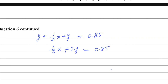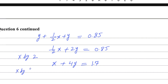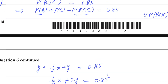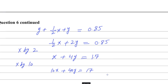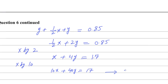To get rid of the denominator, multiply by 2: X plus 4Y equals 1.7. To remove the decimal, multiply by 10: 10X plus 40Y equals 17. This is the second equation. The first equation is 14X plus 20Y equals 30.